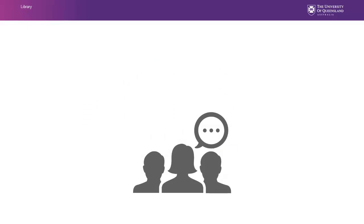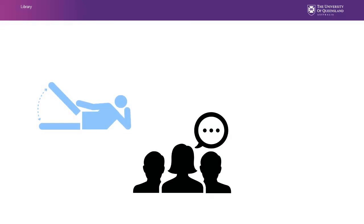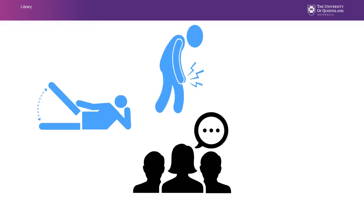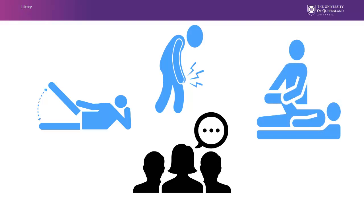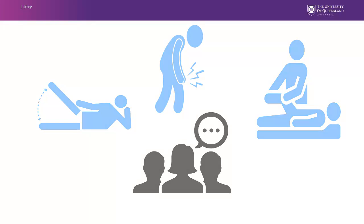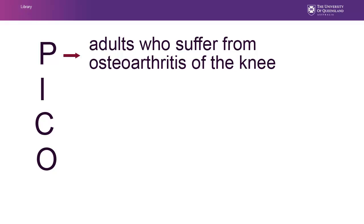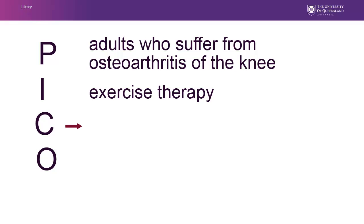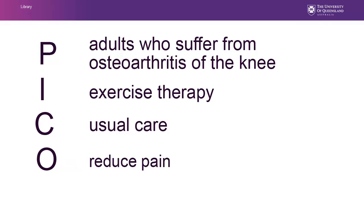Our example scenario is: if exercise therapy can reduce pain in patients suffering from degeneration of the knee, maybe we should recommend it for all our patients with osteoarthritis of the knee. If we apply the PICO model, it will look like this. P: patients who suffer from osteoarthritis of the knee. I: exercise therapy. C: usual care. O: reduce pain.